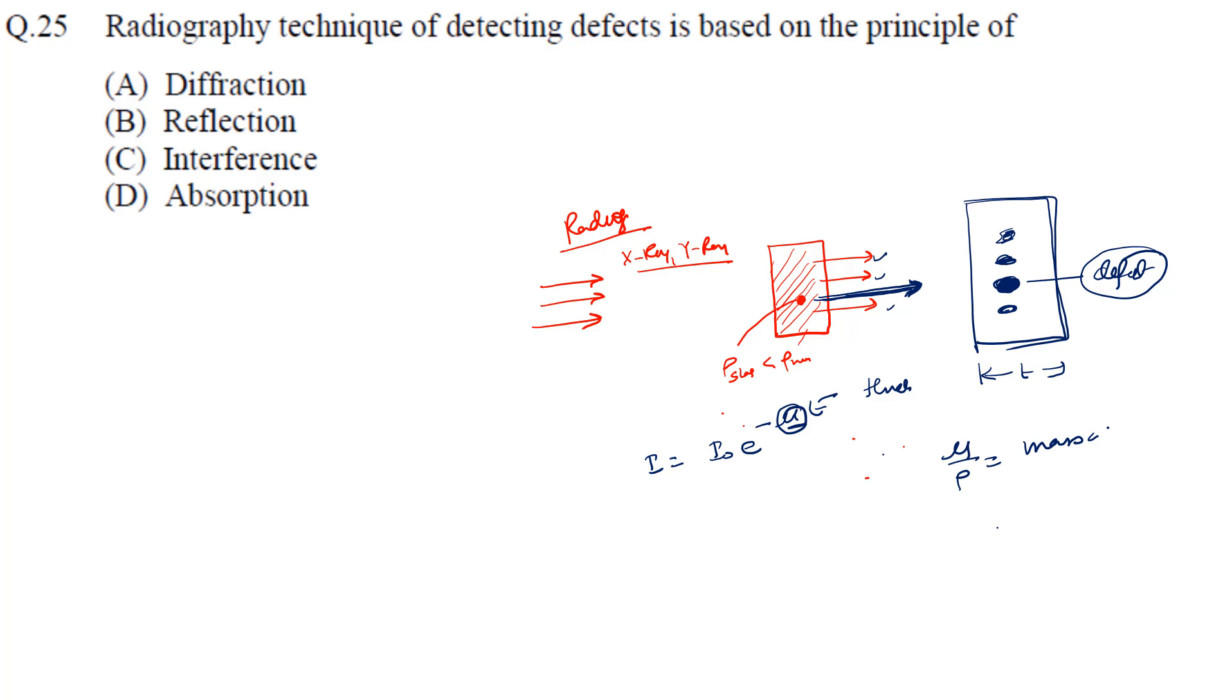Mu is the absorption coefficient. If you divide mu by density, it becomes mass absorption coefficient. I is the intensity we receive and I naught is the initial intensity. This is the complete picture.